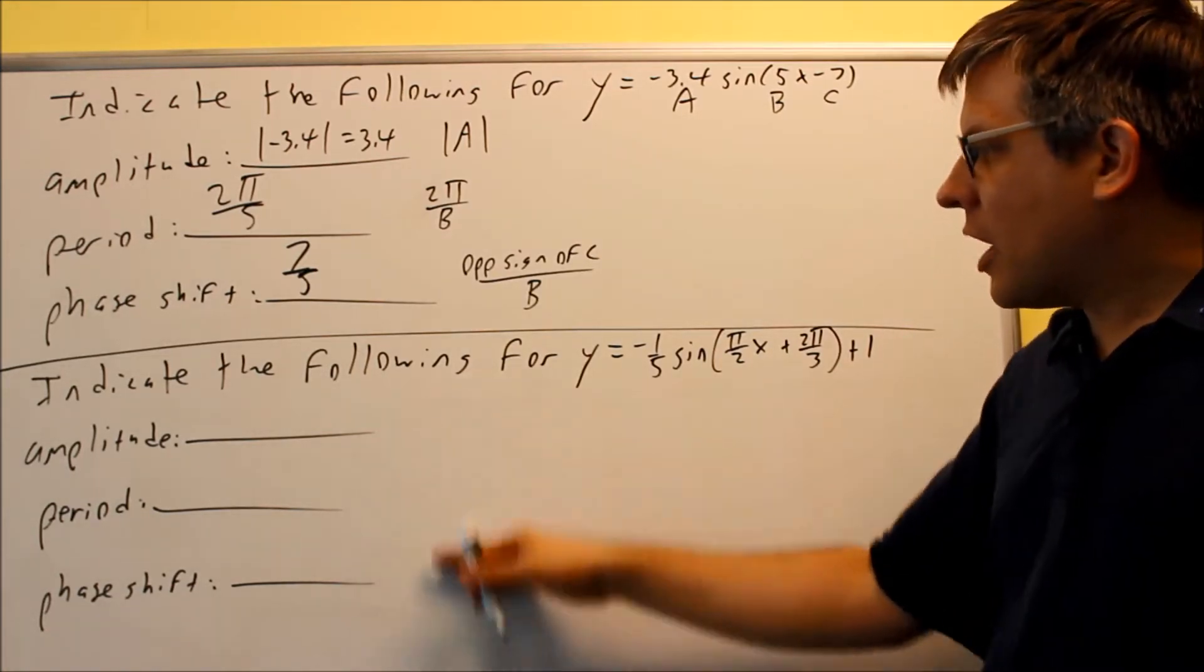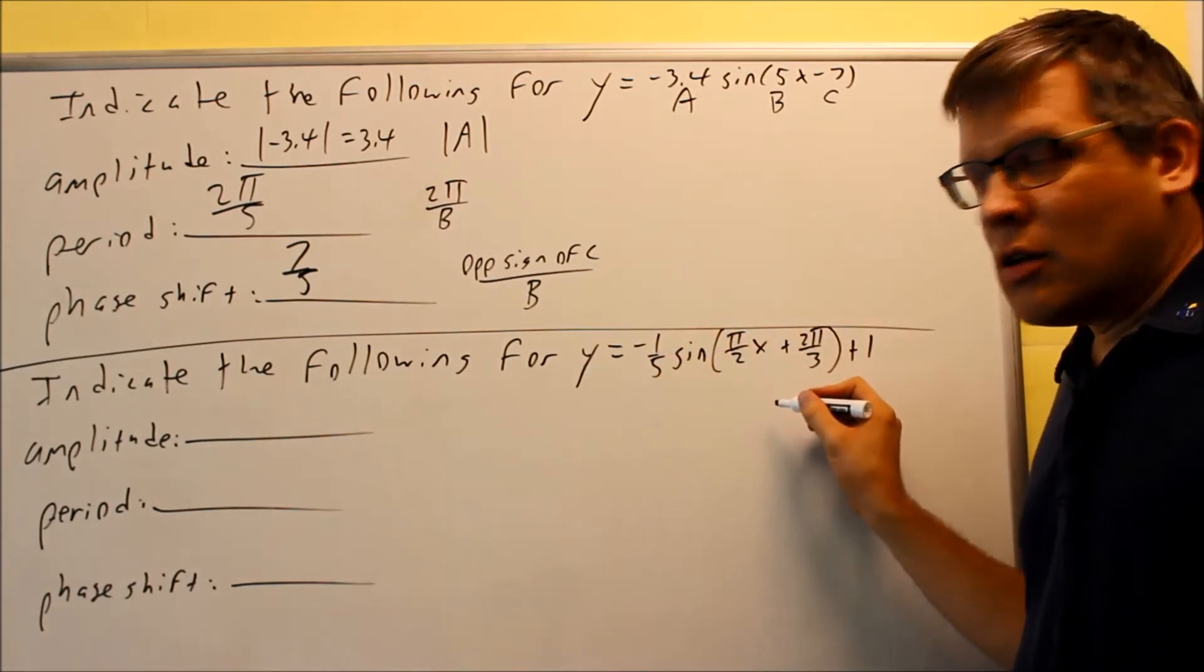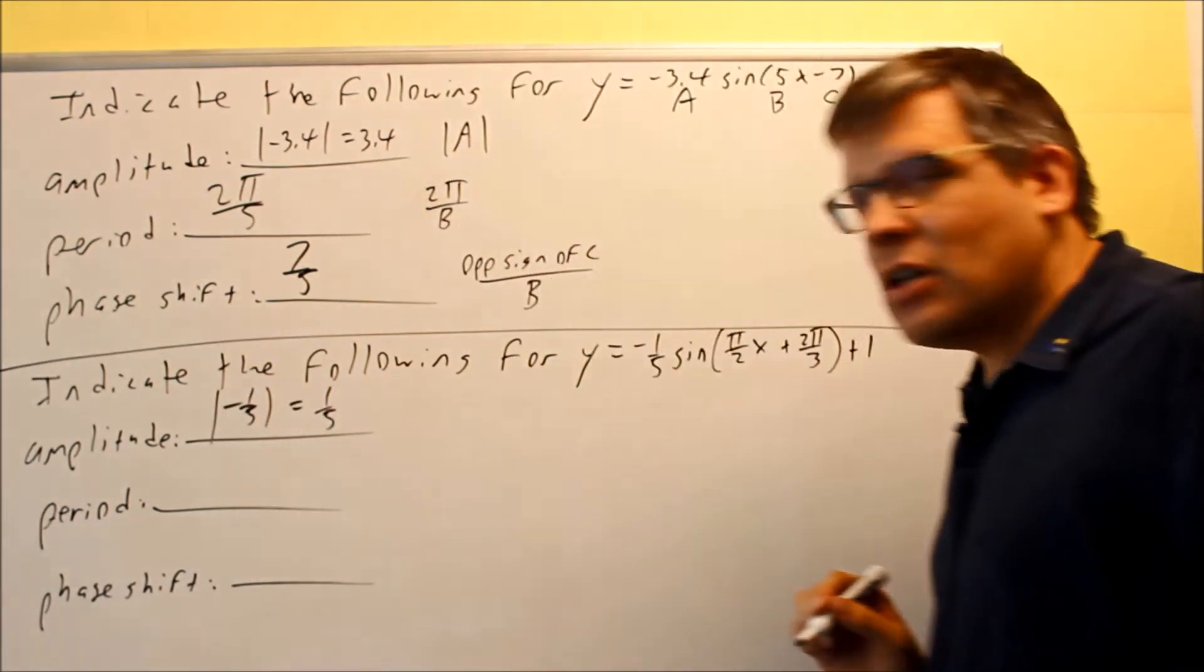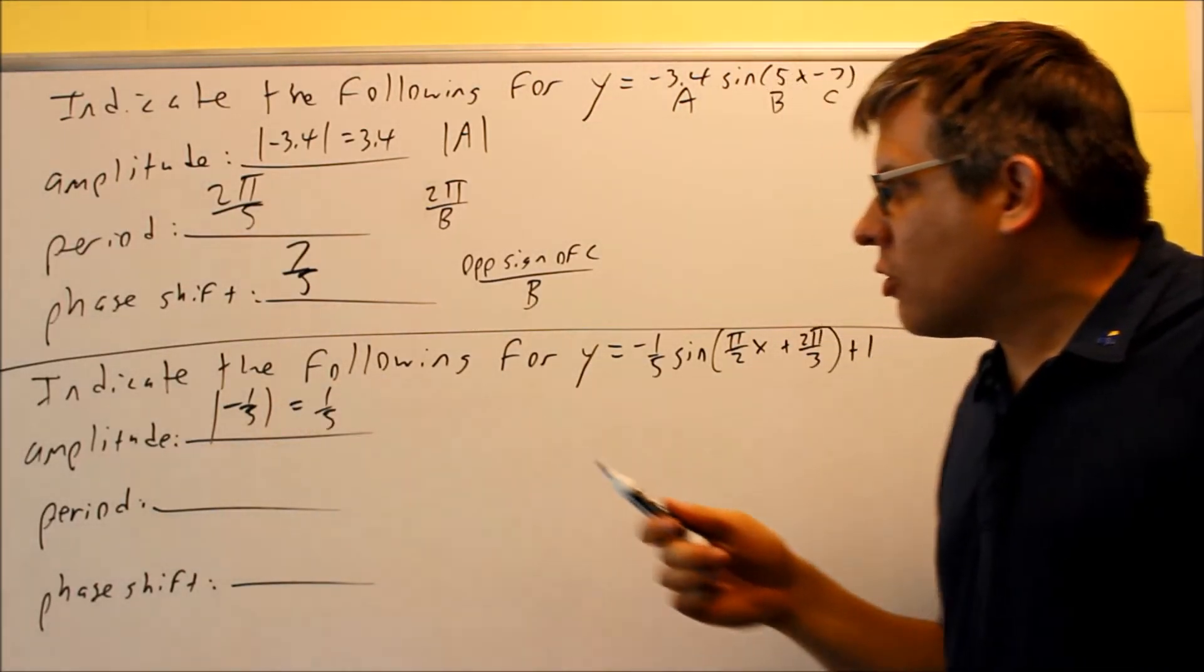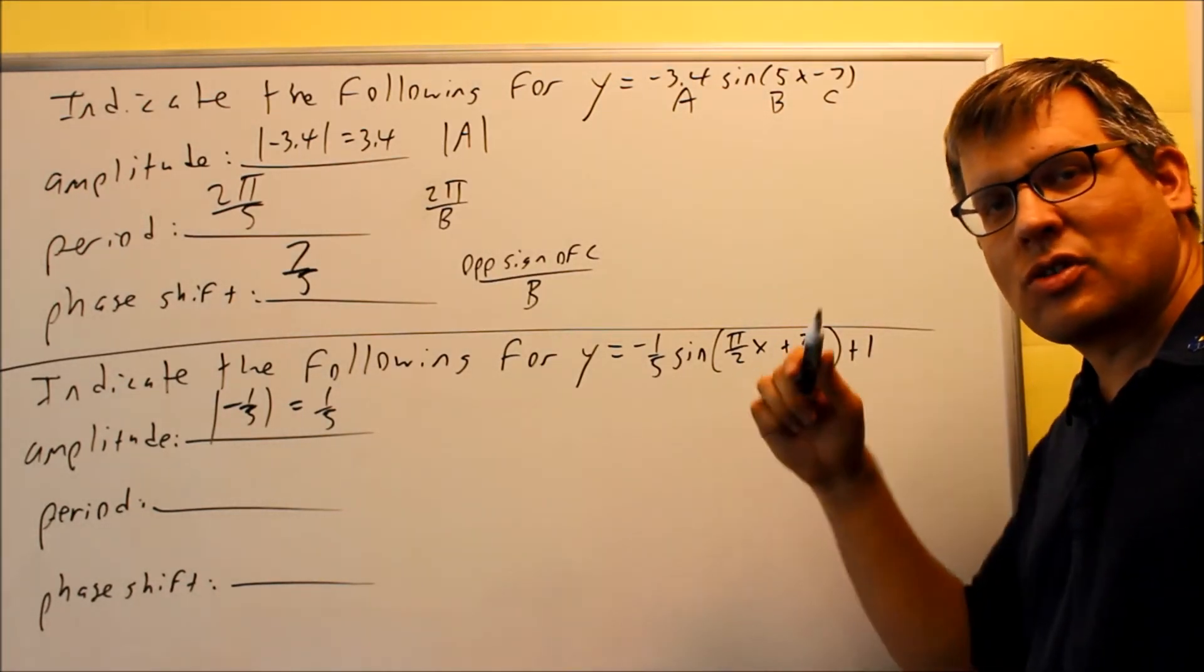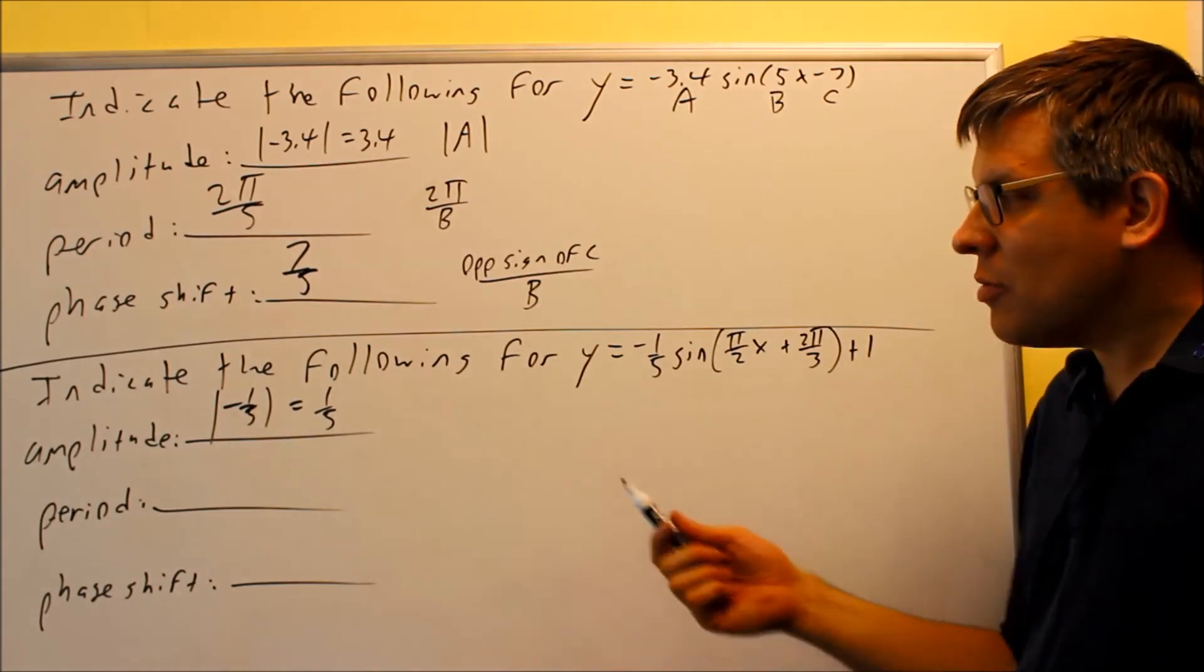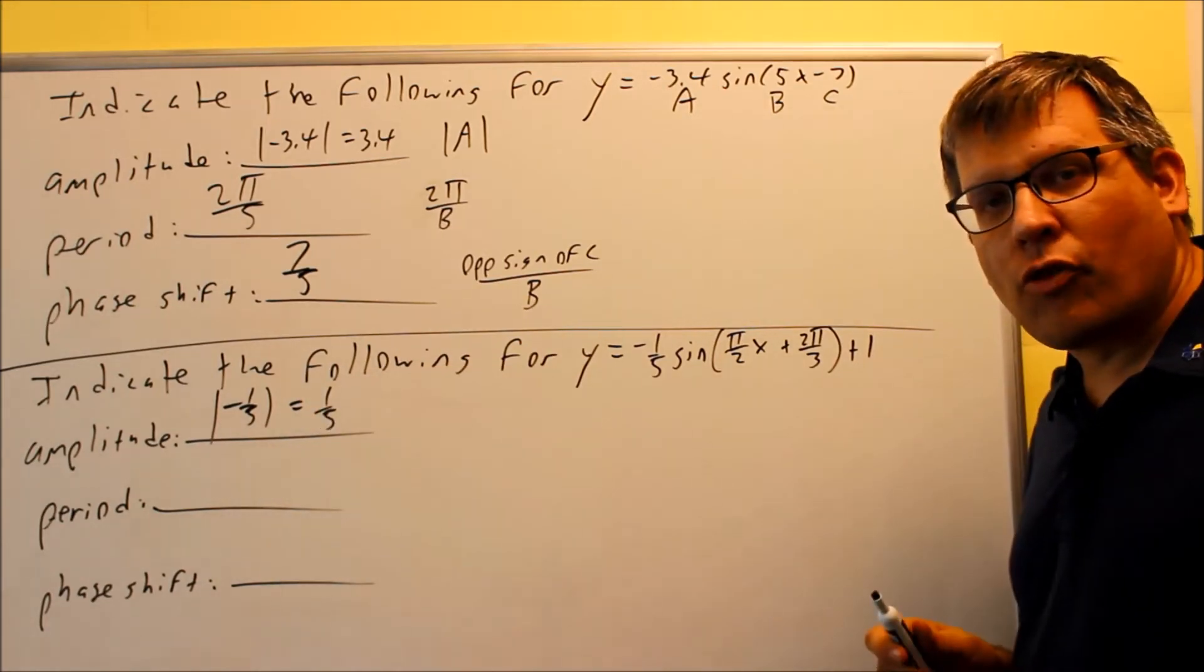Now we're going to do the same thing for the bottom one. Amplitude, it's the absolute value of negative 1/5. Yes, it's possible for you to have a fraction for the amplitude. It doesn't have to always be a whole number. Notice that your amplitude, no matter what, it's always positive. And the reason why that is, is because it's always a positive distance. The distance between the x-axis and the top of the graph or the bottom of the graph in the previous examples we looked at. So it's always going to be a positive number because distance is always positive. That's why you've got an absolute value there as part of the formula.